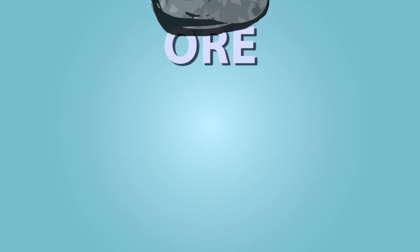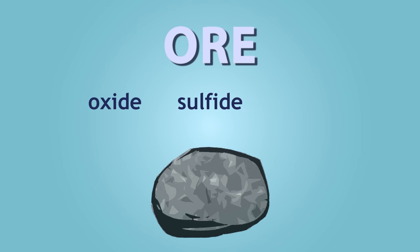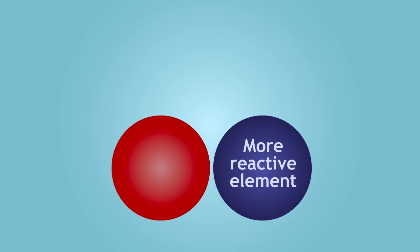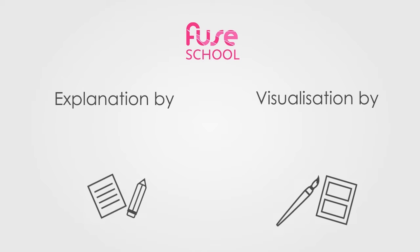In summary, an ore is a rock that contains a high percentage of a certain type of mineral, which can exist as an oxide, sulphide, or carbonate compound. The mineral can be extracted by a single displacement reaction using a more reactive element.